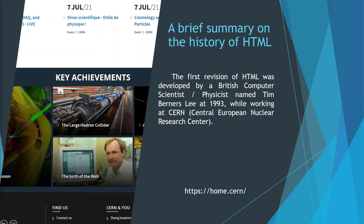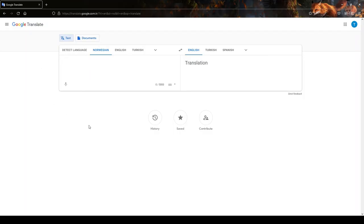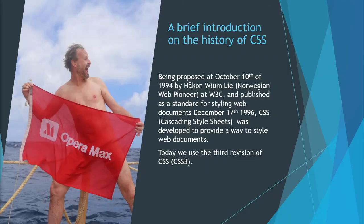Now let's move on to the history of CSS. The man you're seeing on the left side of your screen is the man who developed the Cascading Style Sheets standard. He is also the CTO of Opera Corporation — you know, the Opera browser. In 1994, this man developed and proposed the Cascading Style Sheets standard at the World Wide Web Consortium, also known as the W3C.